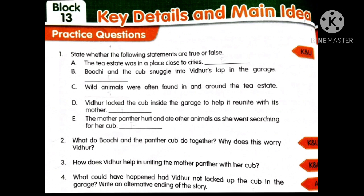The fourth question: what could have happened had Vidur not locked up the cub in the garage? Write an alternative ending of the story. Think about what would have happened if Vidur didn't lock the cub in the garage, and write it as your own ending to the story.